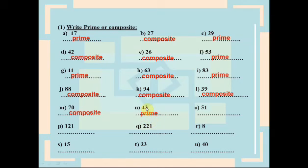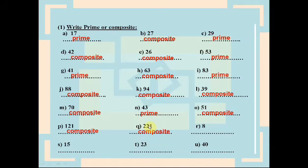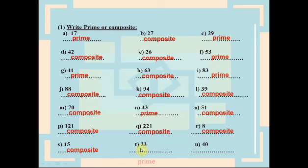43 is a prime number because it is not divisible by any number except itself and 1, so it has only two factors. 51 is composite because it is divisible by 3 and divisible by 17 — it has more than two factors. 121 is also composite because it is divisible by 11.